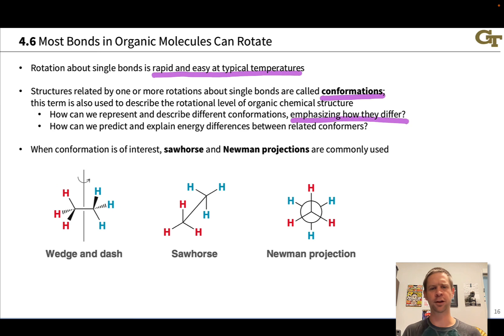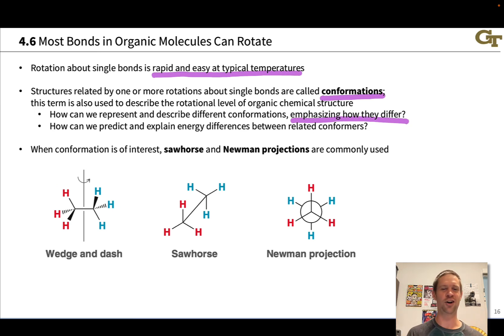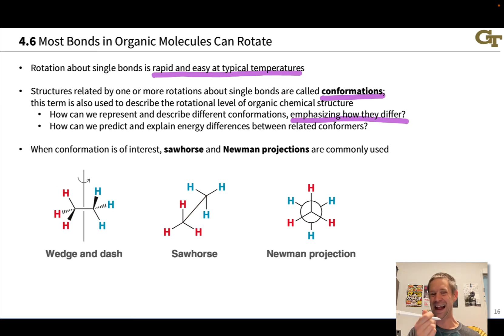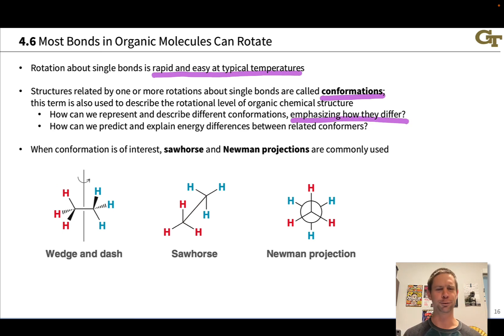It's known as bond torsion in a molecular context. The two most common projections that are used to emphasize and represent conformation are the sawhorse and Newman projections. Both of these involve turning the wedge-dash structure kind of on its side. With the sawhorse projection, we kind of don't go all the way, so this bond is not perfectly perpendicular to the screen, but it's at an angle to the screen with these three hydrogens, this CH3 group, closer to you than this other CH3 group.